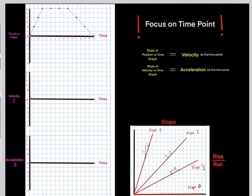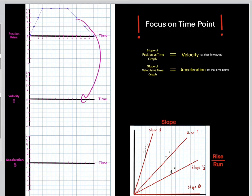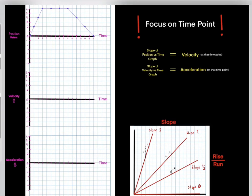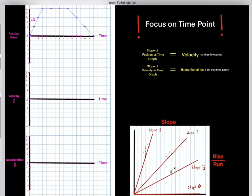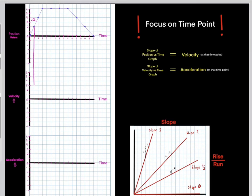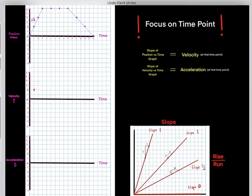Let's try another example. Say we have this position versus time graph and we want to find the velocity versus time graph. Focus on a single time point — at time one second, we see the slope of the position versus time graph is positive two. So the numerical value of the velocity versus time graph is positive two.